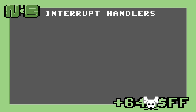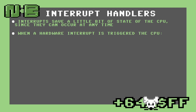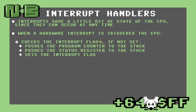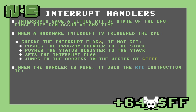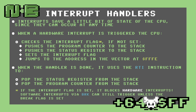Interrupts, when triggered, save a small amount of CPU state to the stack, since they can occur at any time. When a hardware interrupt is triggered, the CPU checks the interrupt flag and, if not set, pushes the program counter to the stack, pushes the status register to the stack, sets the interrupt flag, and finally jumps to the interrupt handler using the vector at FFFE. When the handler is done with its work, it uses the RTI instruction to pop the status register and pop the program counter. Note that if the interrupt flag is set, only hardware interrupts are prevented. Software interrupts from the BRK instruction can still be triggered.